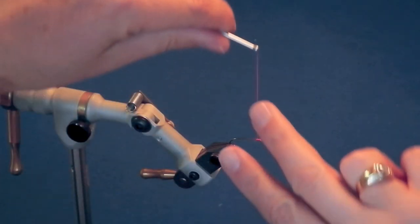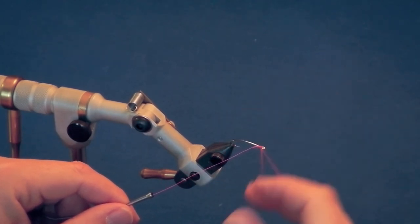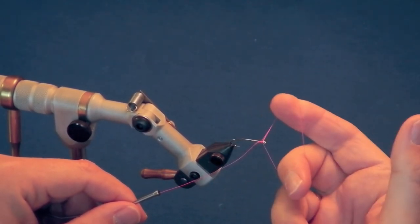Here is the single-hand whip finish at regular speed. Remember to pull the loop at approximately 90 degrees to the hook shank so that it doesn't slip off the hook eye.